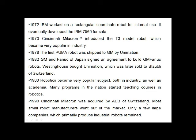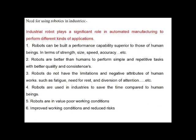In 1983, GM and FANUC of Japan signed an agreement to build GMF robots, which were later sold to ABB of Switzerland. Robotics became a very popular subject both in industry and academia, with many programs starting to teach courses in robotics. By 1990, ABB of Switzerland was prominent and most small robot manufacturers went out of the market, leaving only a few large companies primarily producing industrial robots. Industrial robots play a significant role in automated manufacturing industries, performing tasks that surpass human capabilities in strength, size, speed, and accuracy, with better quality, consistency, and the ability to work in poor or hazardous conditions.